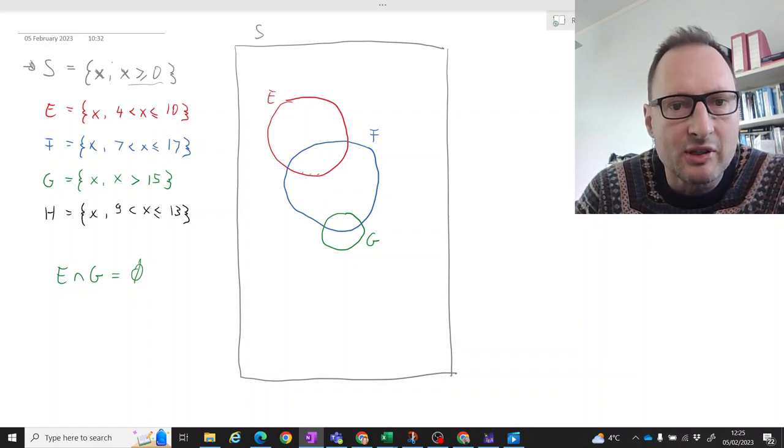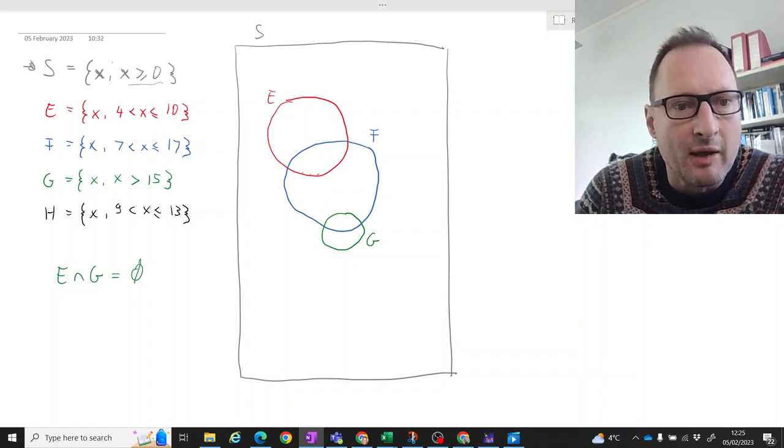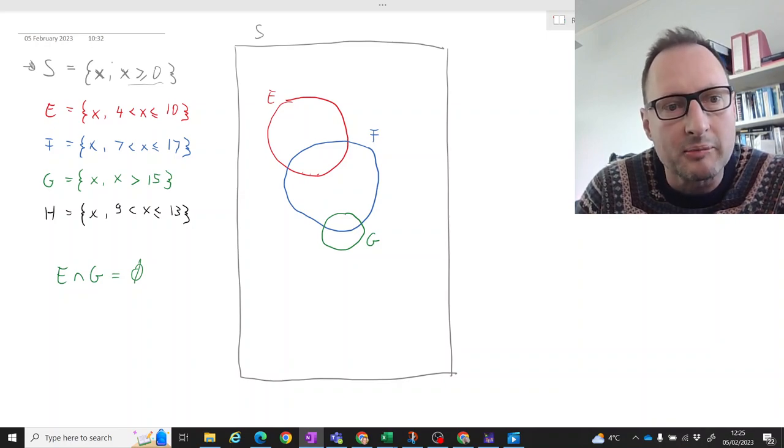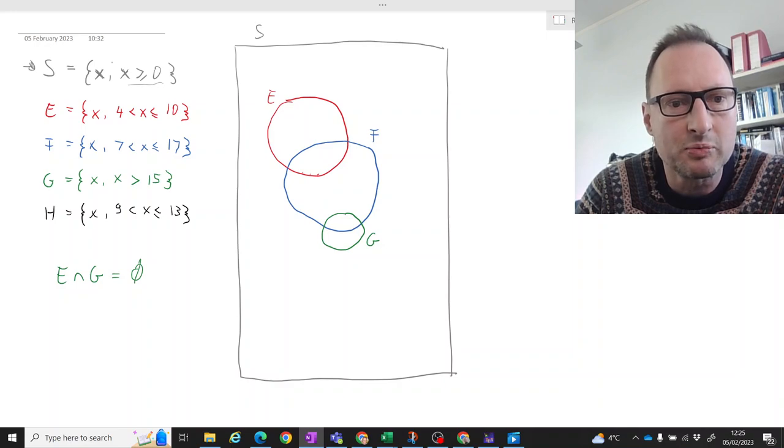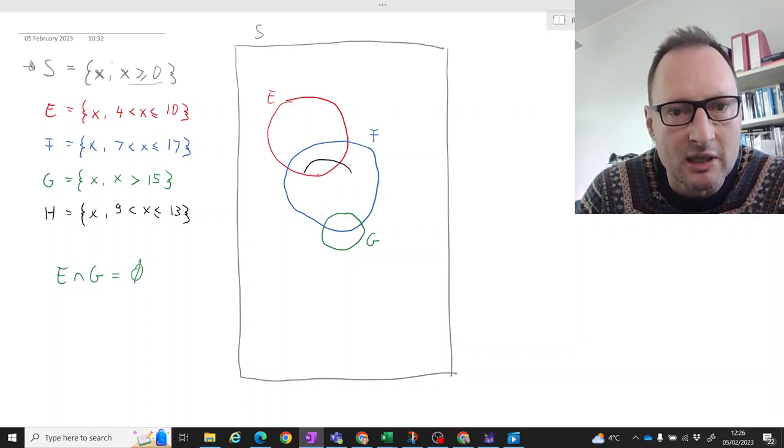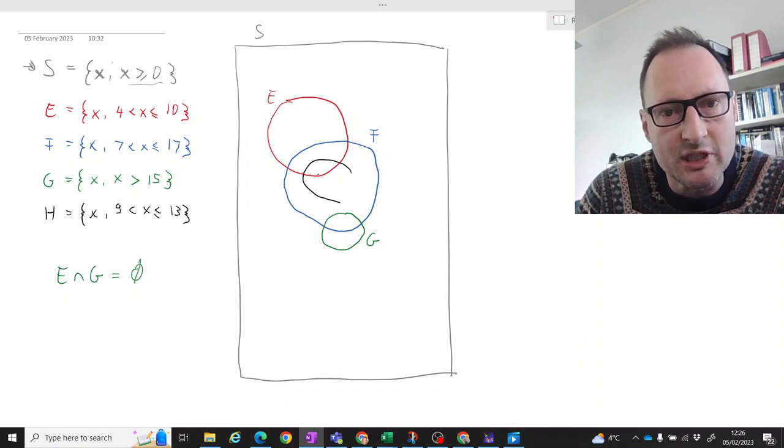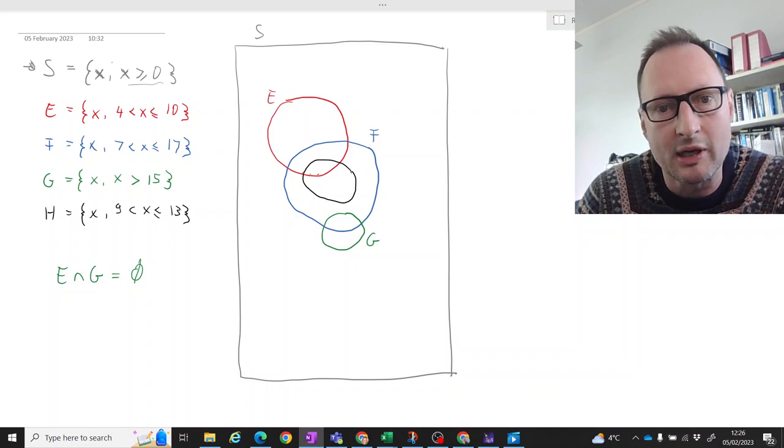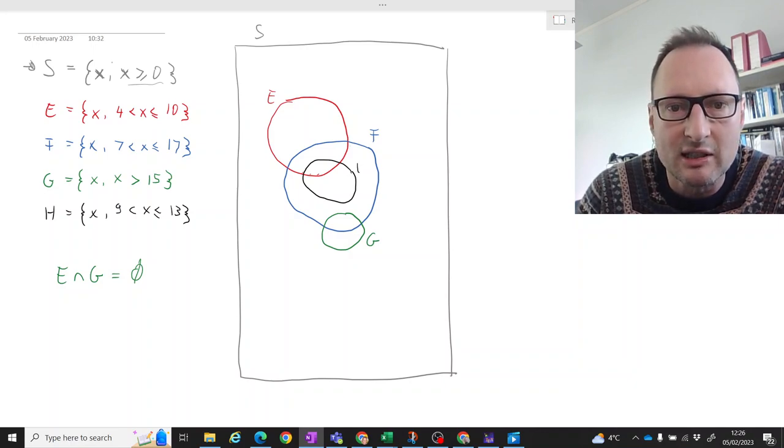And let's think about how H and F relate to each other. Well, all outcomes which are in H are also in F, because all numbers between 9 and 13 are automatically also between 7 and 17. So how we can draw H here is, it has an intersection with E, no intersection with G, and all its area is inside F.